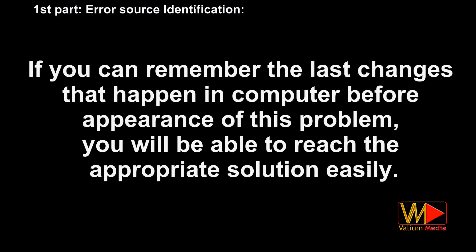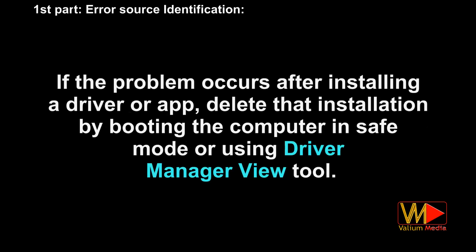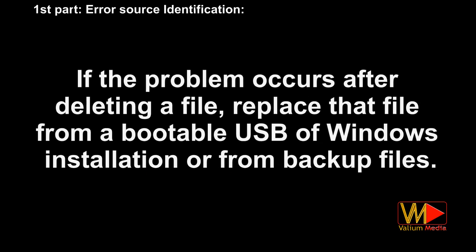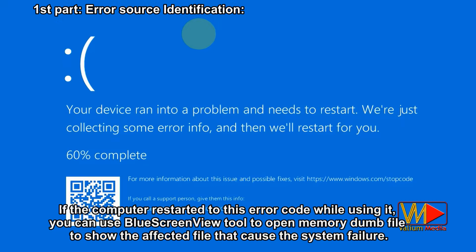If you can remember the last changes that happened on the computer before the appearance of this problem, you will be able to reach the appropriate solution easily. For example, if the problem is related to the latest Windows update, delete that update to fix your problem. If the problem occurs after installing a driver or app, delete that installation by booting into safe mode or using the Device Manager View tool. If the problem occurs after deleting a file, replace that file from a bootable USB Windows installation or from backup files. You will see all methods to solve this problem in part three, but you will have to choose the appropriate method according to the identified error source. If the computer restarted to this error while using it, you can use BlueScreenView tool to open the memory dump file to show the affected file that caused the system failure.